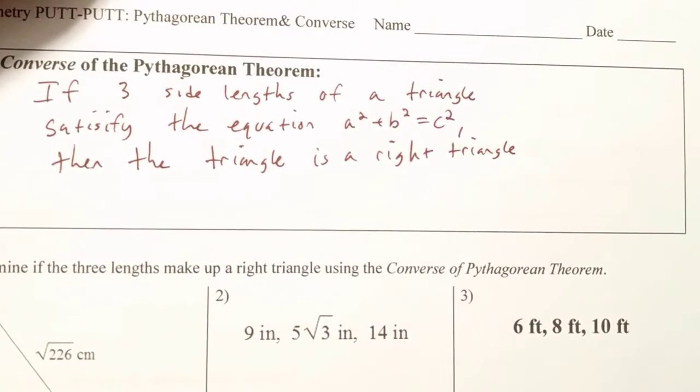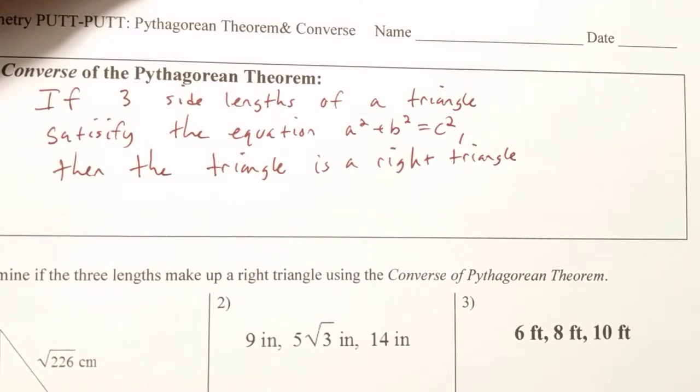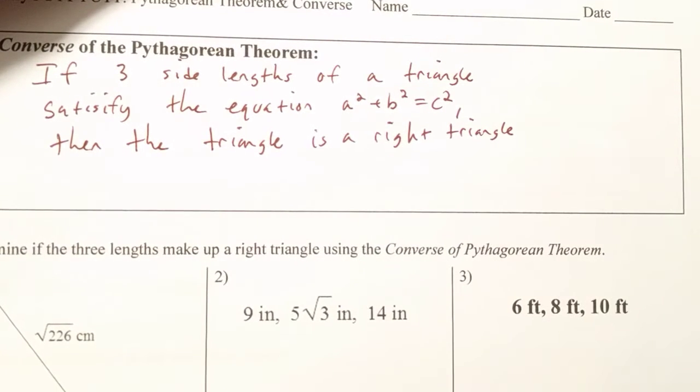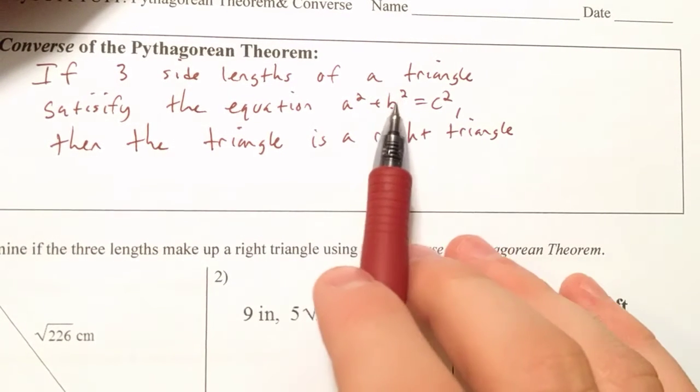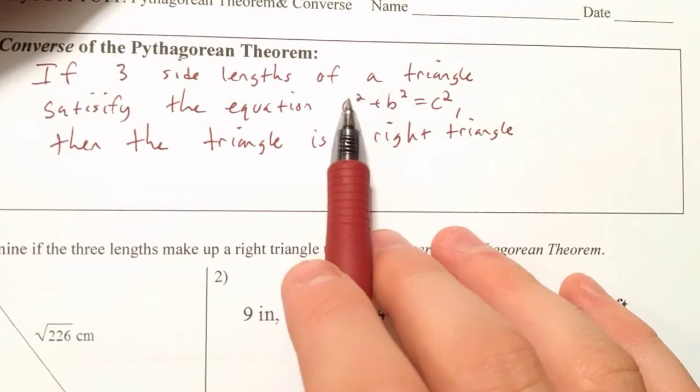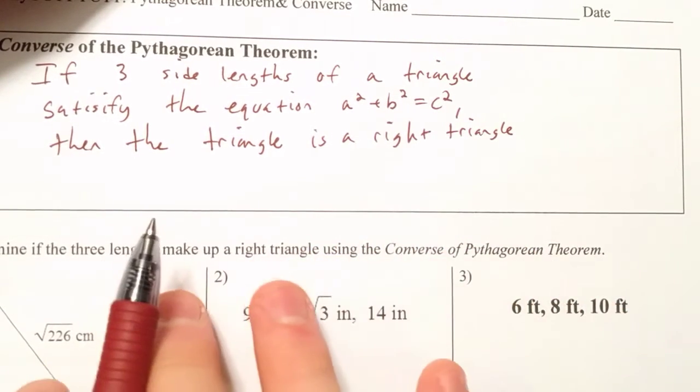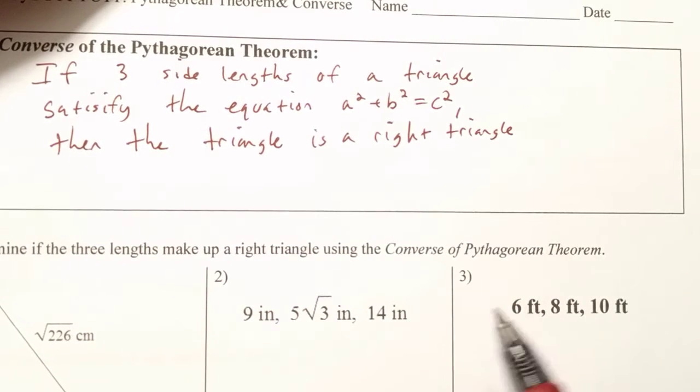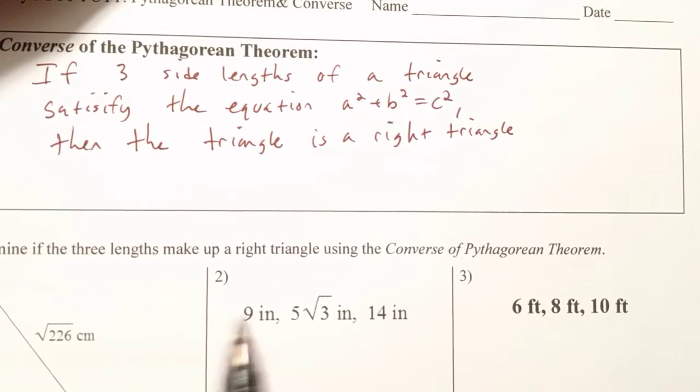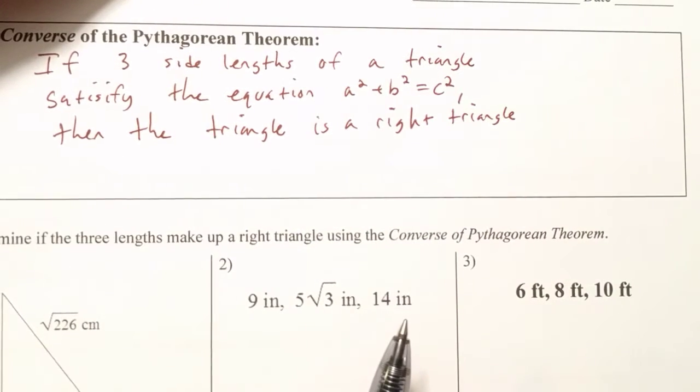So what you're going to be looking at is three side lengths, whether it's a picture, diagram, or just a list of numbers. And you're going to determine if it's a right triangle, yes or no. And you determine that by finding the sum of the squares of the legs, is equal to the square of the hypotenuse. If the two sides are equal, then it turns out the triangle is a right triangle. If the two sides are not equal, then it is not a right triangle. Still a triangle, but just not a right triangle.